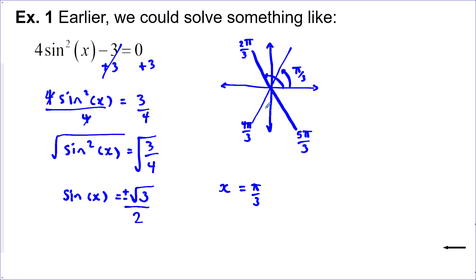So I can just say pi over 3 plus pi n, where n is an integer, will give me that one. And then to get this one here, just start with 2 pi over 3, because we like to start with the smallest positive angle that will work. And then I can add pi n also.